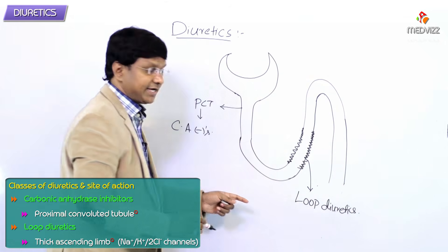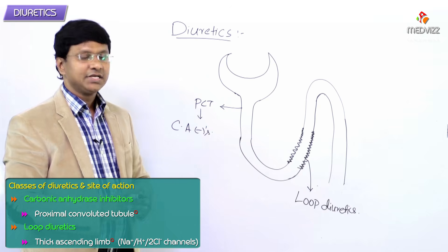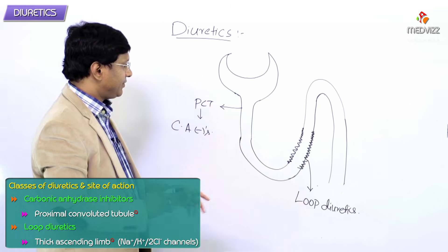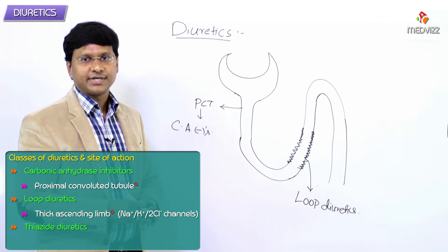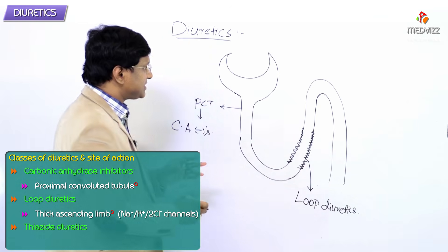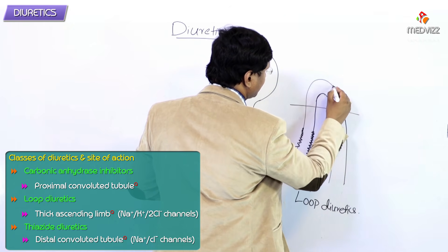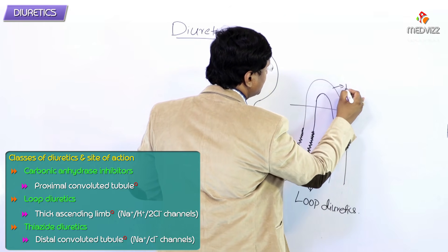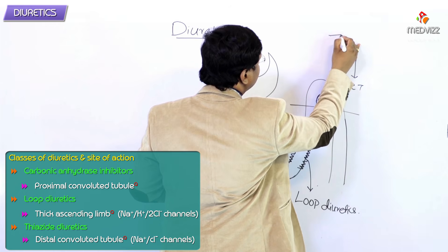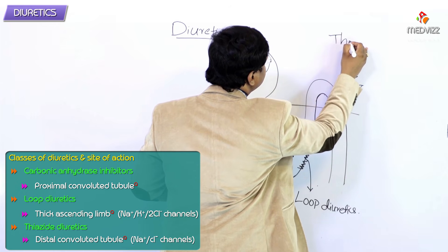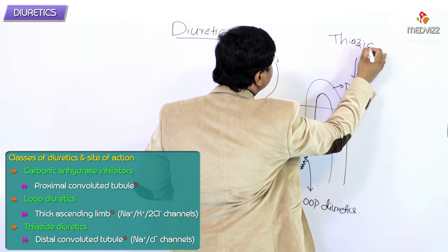Next we have the thiazide diuretics. Here is the distal convoluted tubule, so at the level of the DCT — remember — the thiazide diuretics will act.